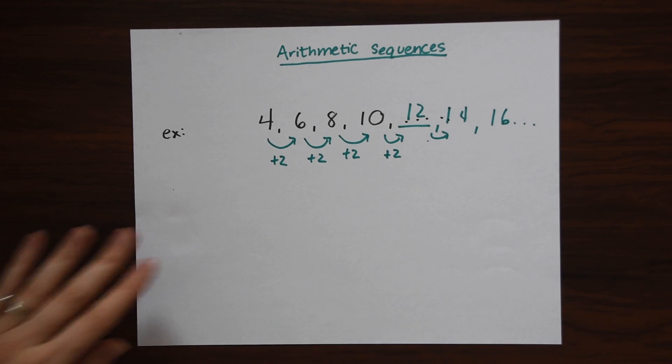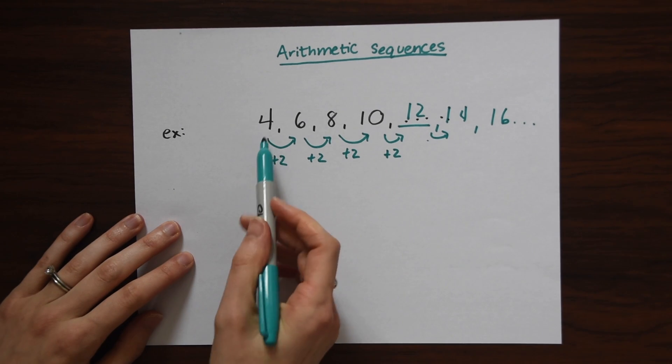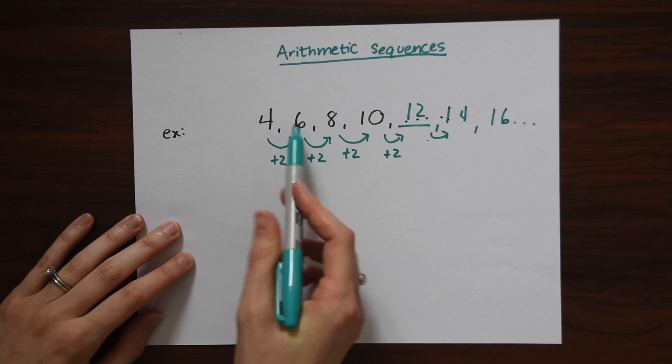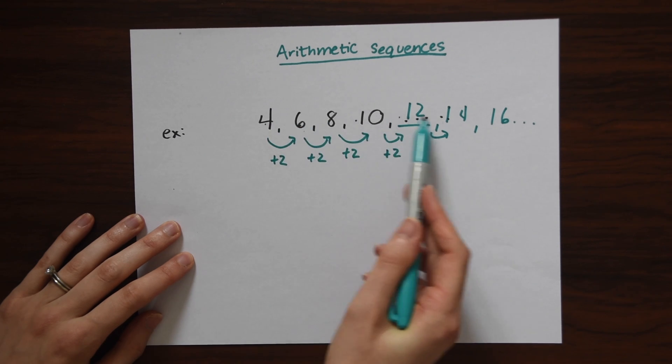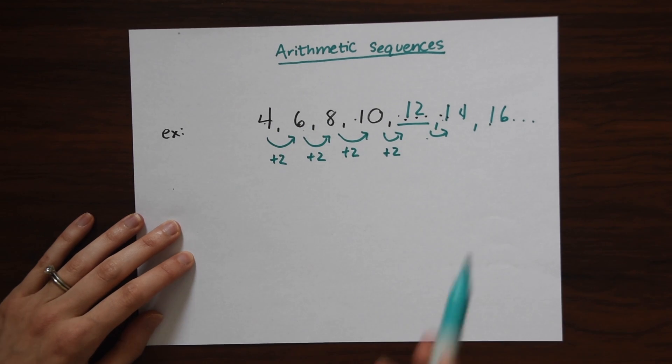So these are the first couple terms. This is like our first term, our second term, our third term. So we have 1, 2, 3, 4, 5, 6, 7. We have 7 terms here that we found.